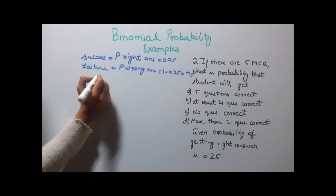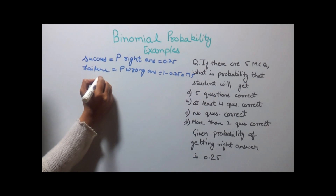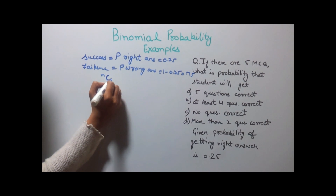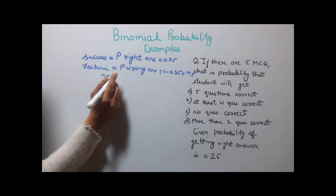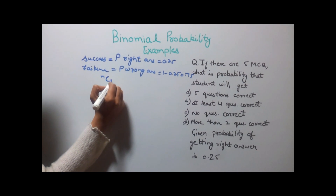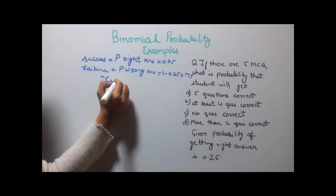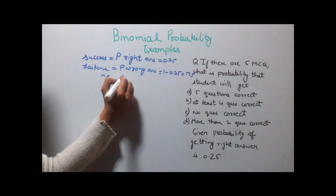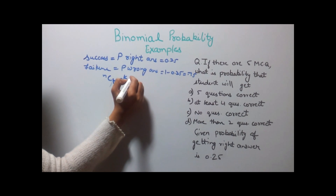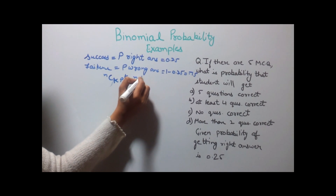The formula for binomial probability is nCk, p to the power k, into q to the power n minus k.